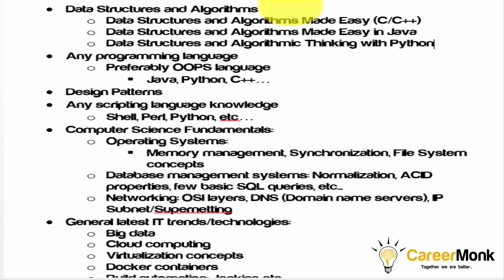If you are into C++, go with that edition. If you prefer Java, use the Java edition. Since tier 1 and tier 2 companies don't focus on a specific language, don't buy multiple books — except for the code, everything is the same and you will feel redundancy. If you want to look at Java code while using the C++ book, you can go to the CareerMonk GitHub location where you can find code in Java, Python, and C++.